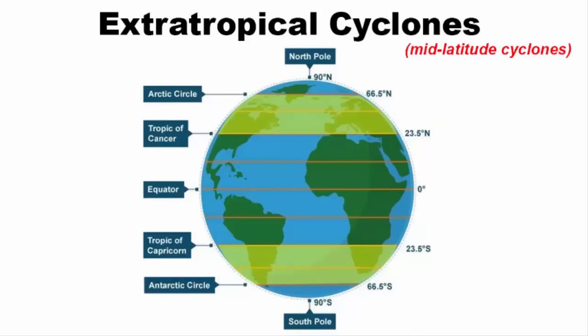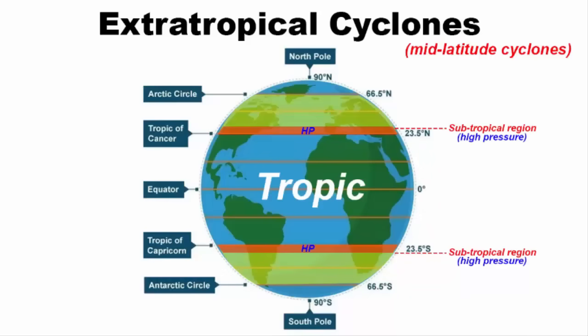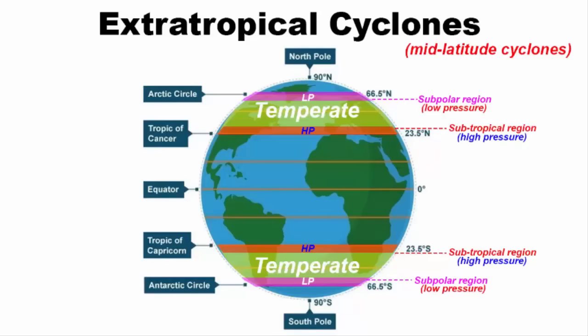Generally in between 25 and 35 degrees north and south latitude, you will find the subtropical region which is a high pressure belt. And it is also a transition zone from tropics to temperate region. And then in between 50 degree and 70 degree north and south latitude, you will find the subpolar low, which is a low pressure belt. And it is a transition zone from the temperate to polar region.